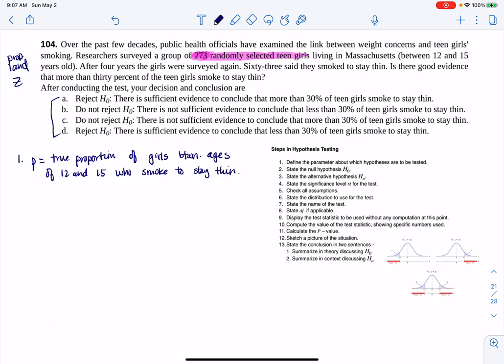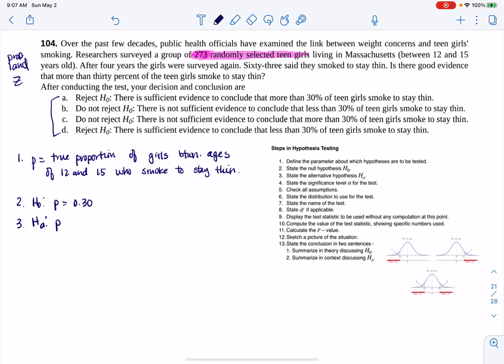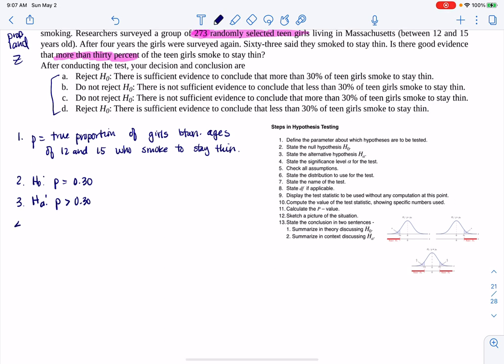These researchers are interested in if there's more than 30% of girls smoking to stay thin. So when I create my null and my alternate, whatever letter you define up in step one should show up in the null and the alternate. This is going to be 30% is our starting point, and we're suspicious that it is greater than 30%. I'm going to take that phrasing and turn it into a greater than alternate. I was not given an alpha, so I'm going to default to 0.05, industry standard, and let's go check some assumptions.